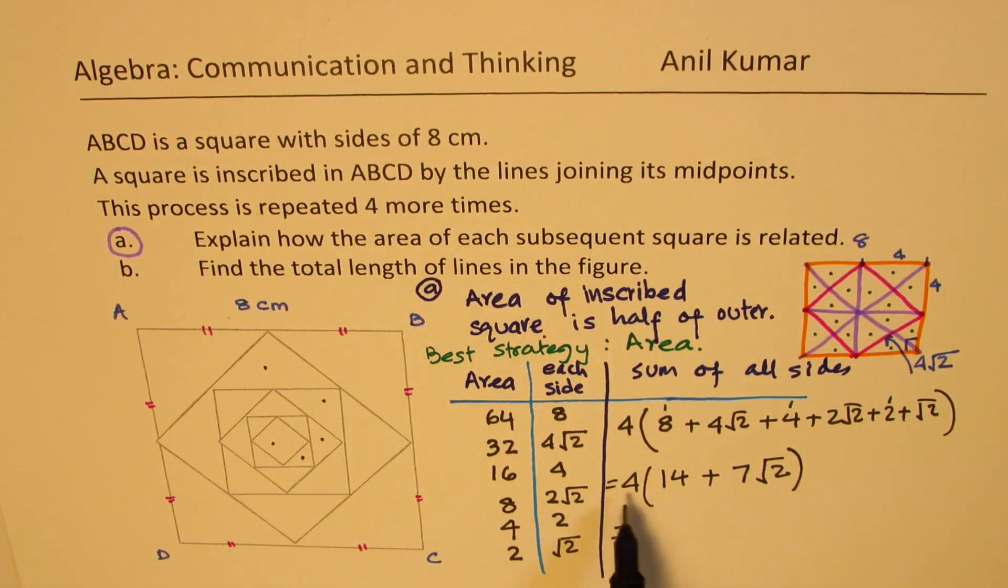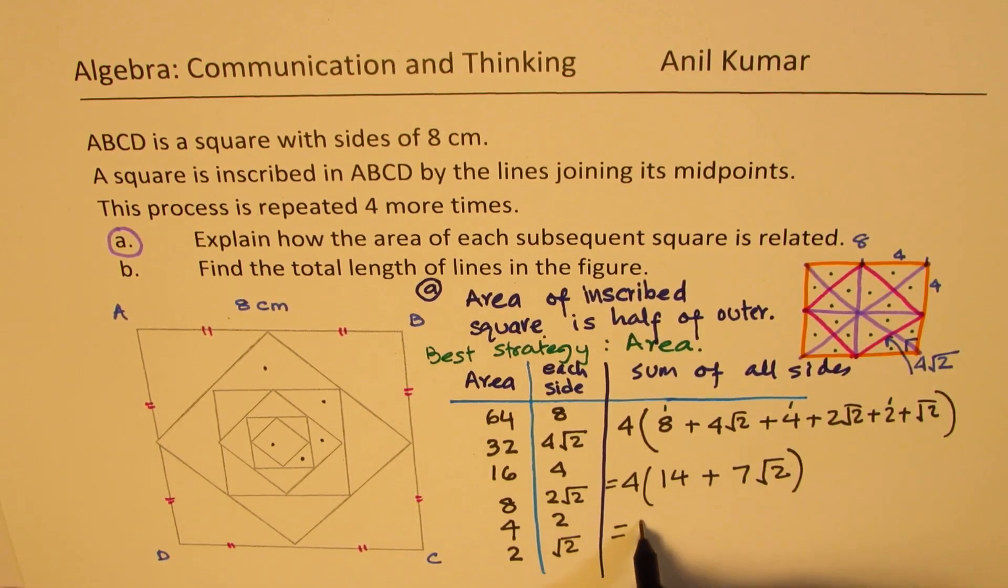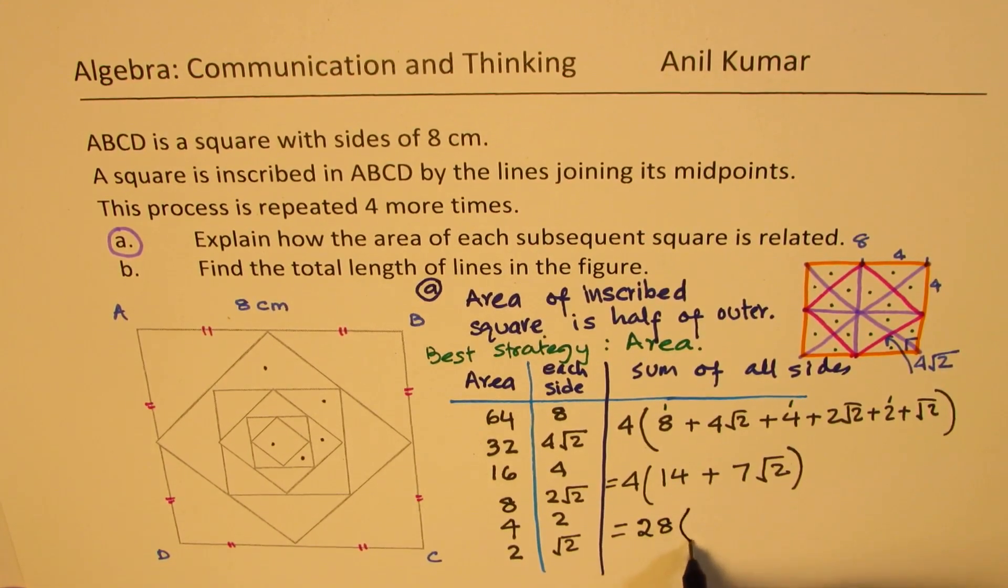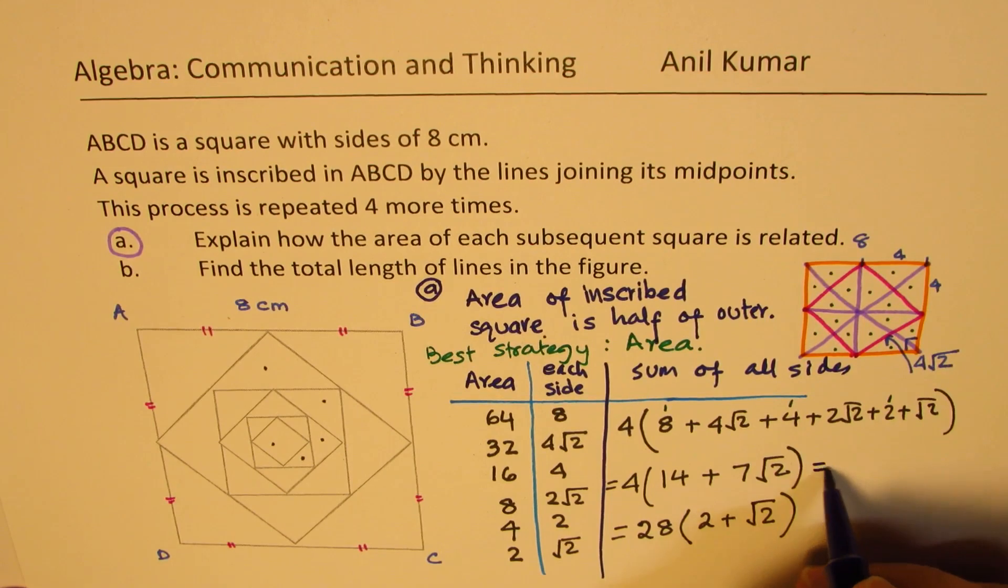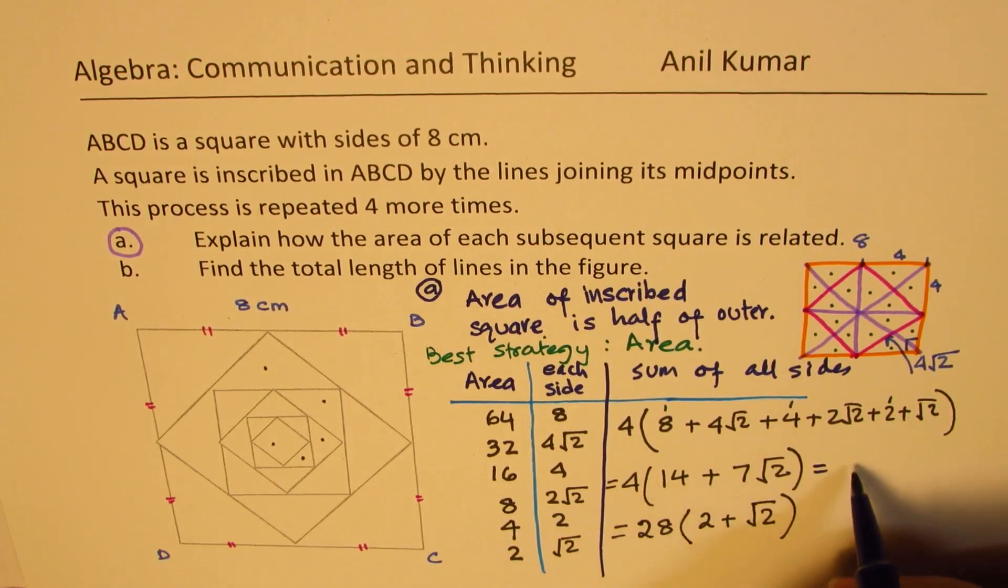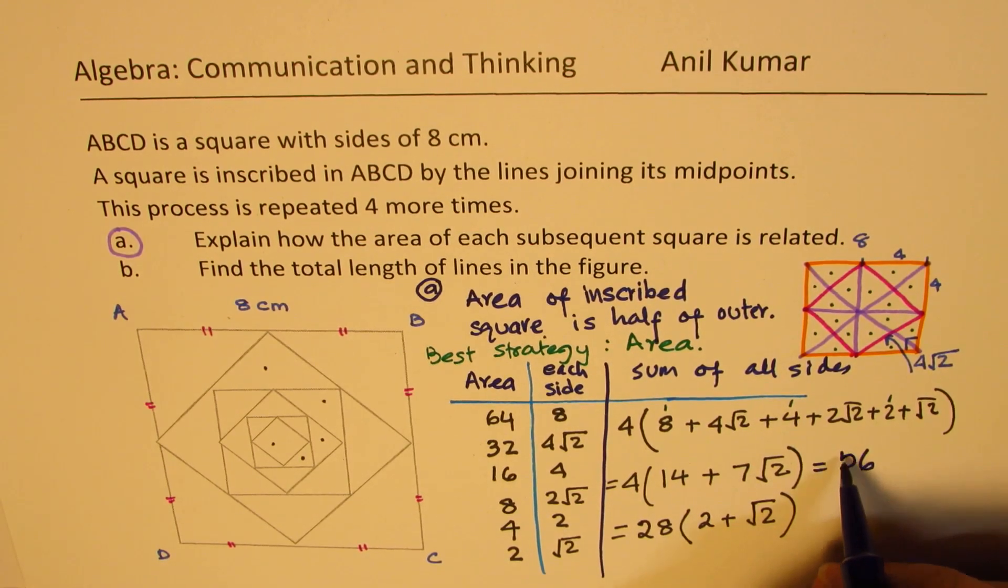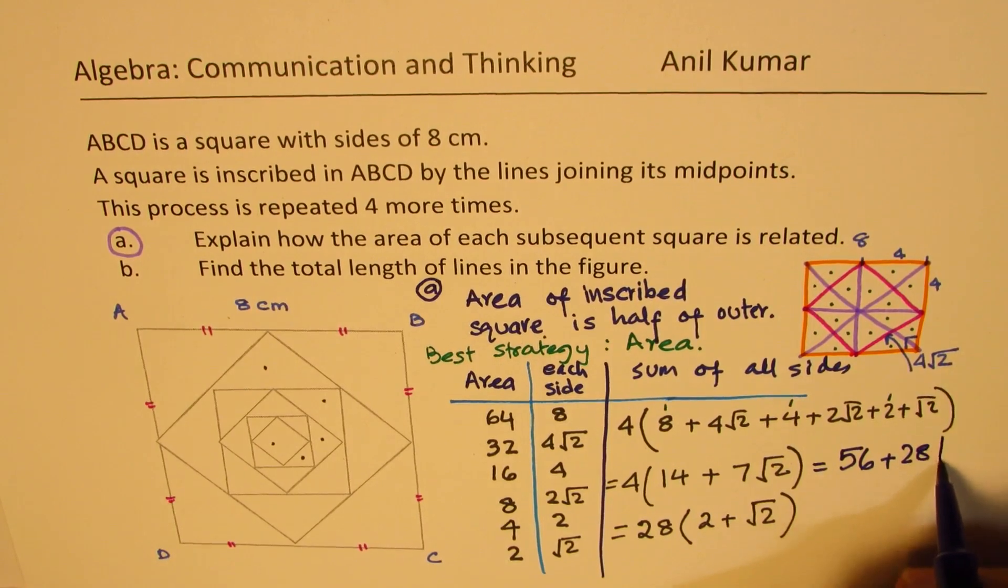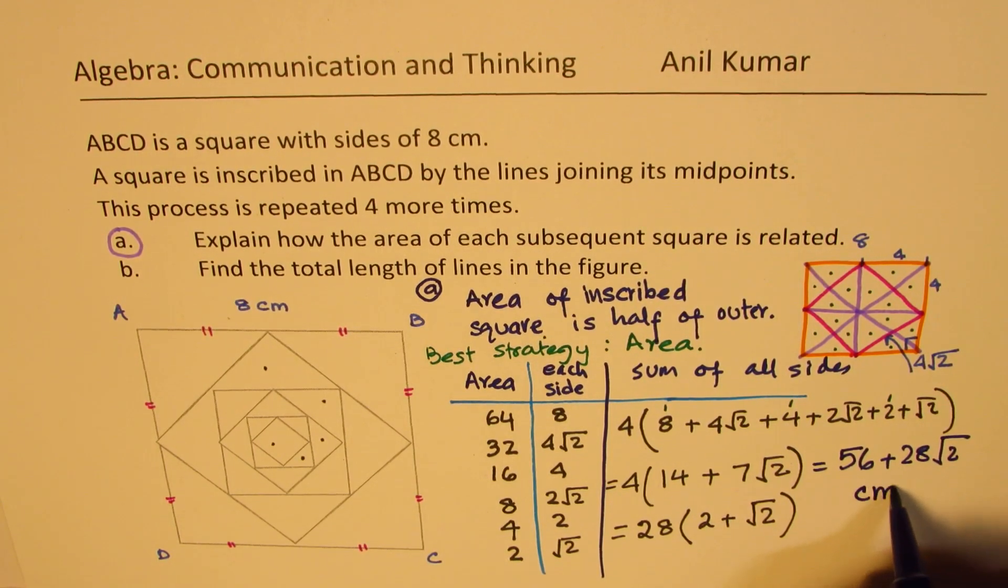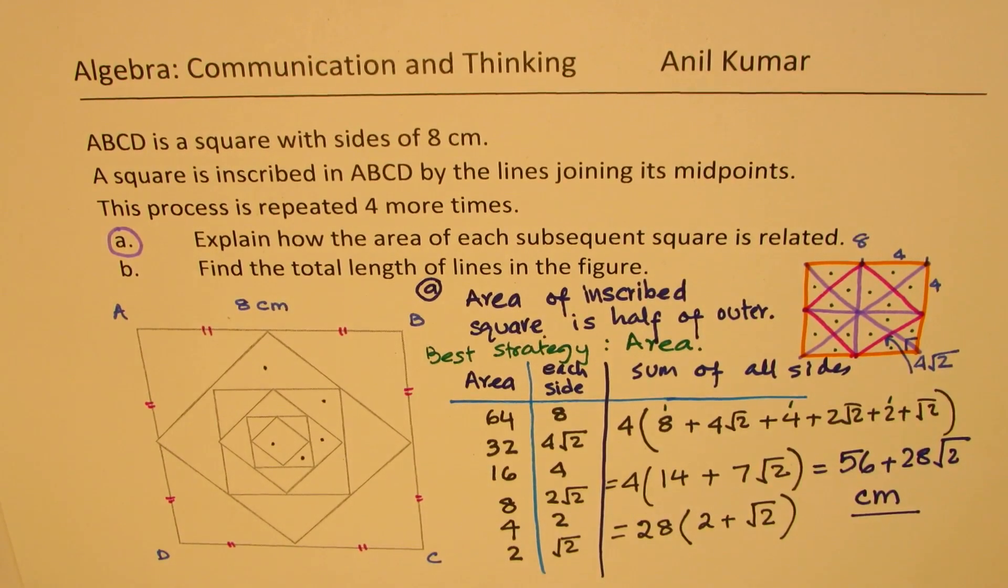Now we could write it in either way. I could just multiply by 4 and write them. Or I could factor 7. I could write this as 7 factored out. We can write 28 and we get 2 plus square root 2. Or I could also write my answer as we could just multiply by 4. 4 times 4 is 16, 6, 1. 4 times 1 is 4 and 1 is 56 plus 28 square root 2. Either way the units will be definitely centimeters. Is that clear to you?